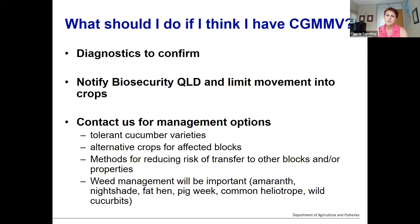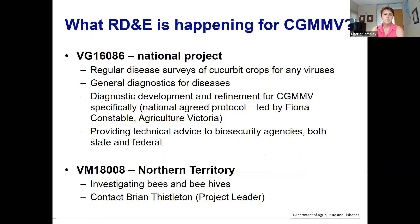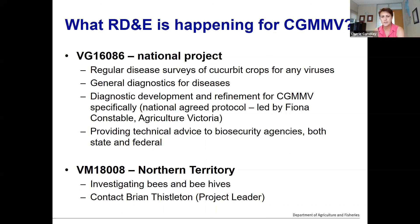We have a lot of information about what you can grow and how to minimise risk of transfer, and what weeds are going to be a problem on your property. For future research and R&D for CGMMV, we have this national project with a range of activities. The Northern Territory is also about a third of the way into a new project looking at bees and beehives as a risk for transfer of CGMMV, including decontaminating beehives — it's a really good project with promising outcomes expected.